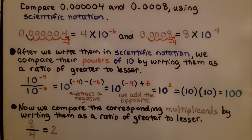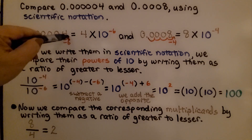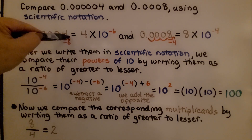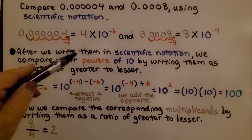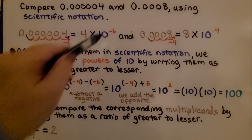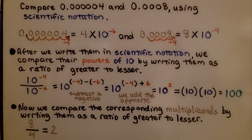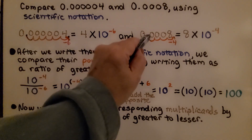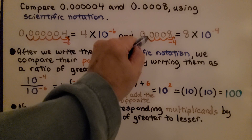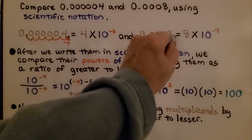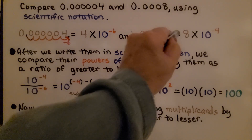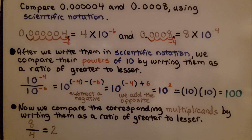Here it's telling us to compare the same two numbers using scientific notation. We move the decimal point 6 hops to be behind the 4, so we get 4 times 10 raised to the negative 6th power. And we move this decimal point over 4 hops to get 8 times 10 to the negative 4th power.